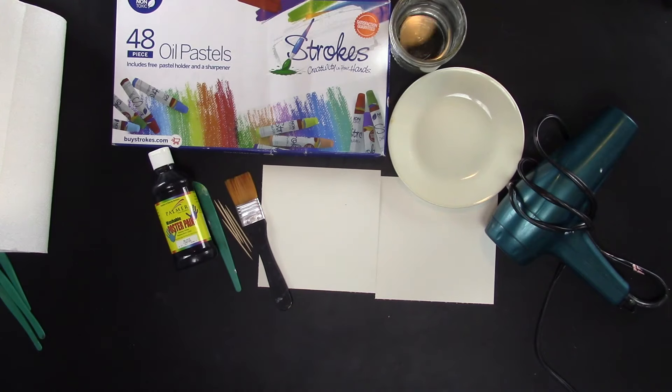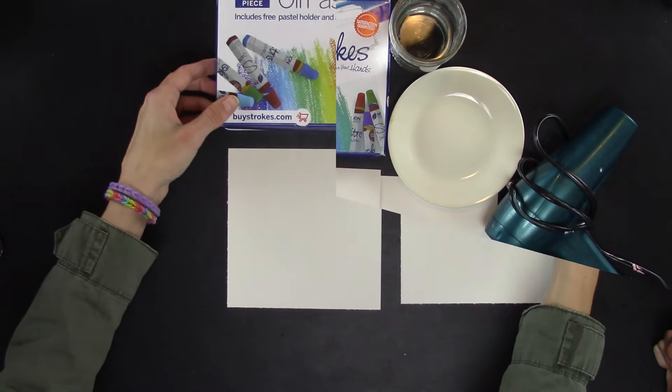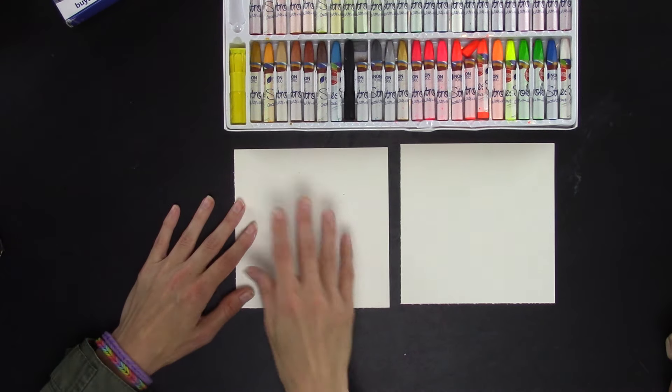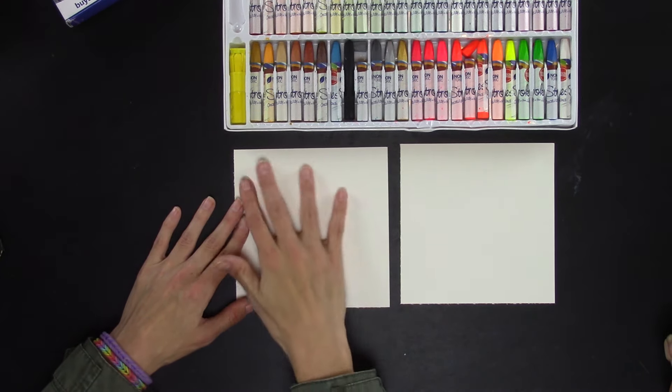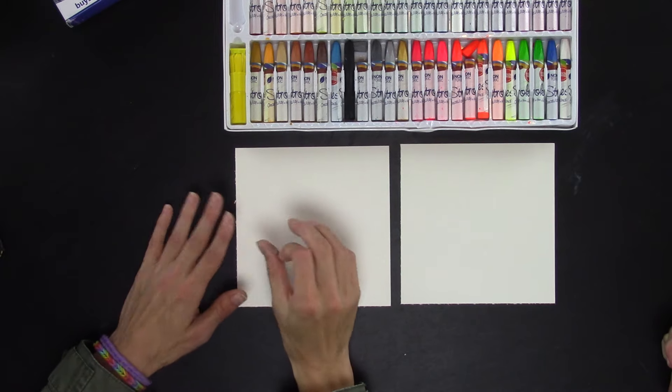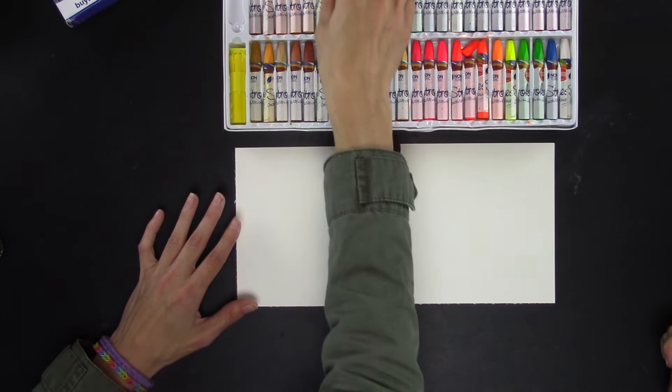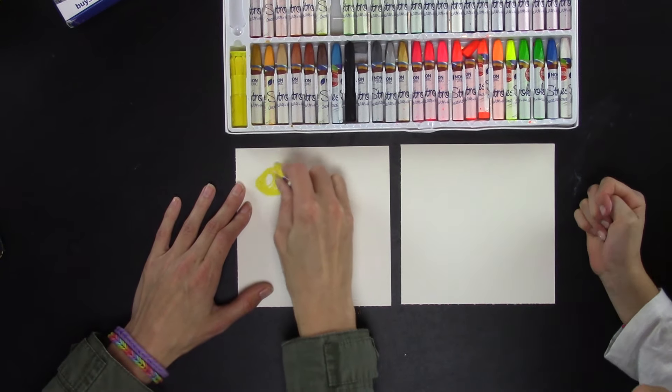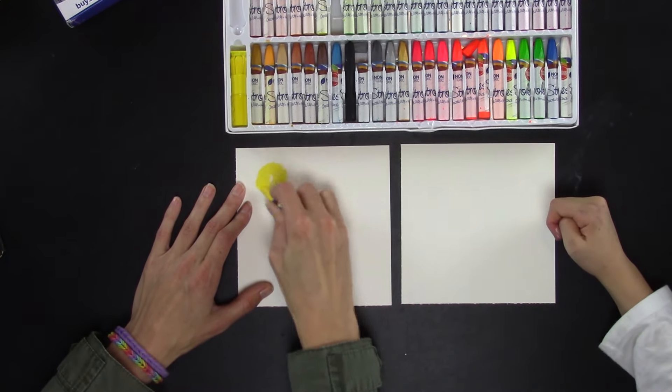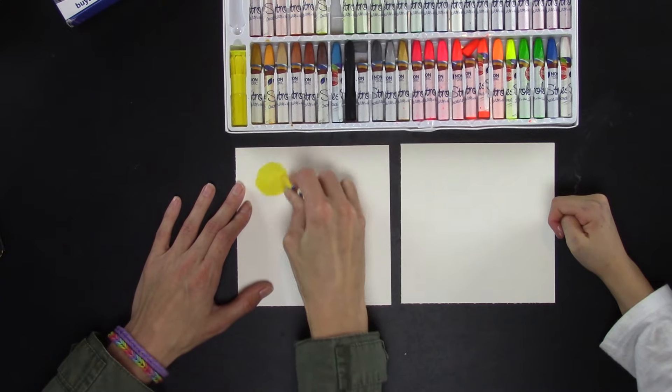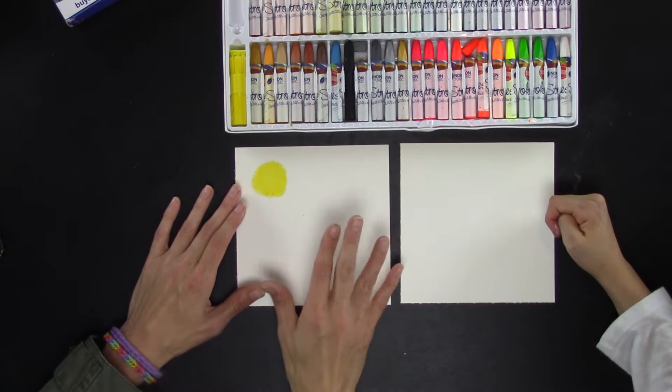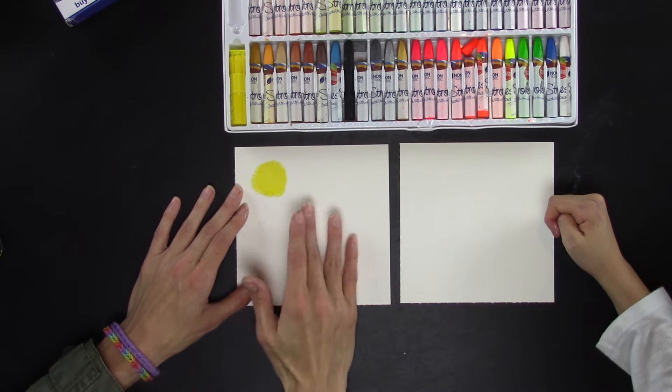Once you have those supplies, you're ready to begin. So the first thing you're going to do is take your oil pastels and color all over this. You can make a picture if you want, doesn't matter. So say you want any colors in different areas, want to make a moon over here, you could.